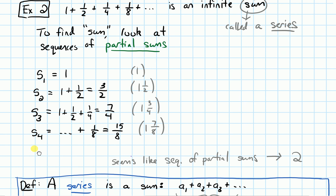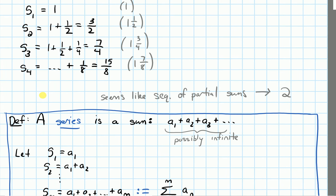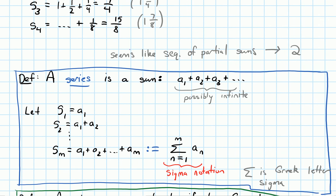Now let's state a more general definition of what a series is. A series is a sum. In general, it's going to have the form a1 plus a2 plus a3, where these a_i's are just some numbers, plus dot dot dot — so our sum might be infinite. We think about this series in terms of partial sums: s1 is just the first term a1; s2 is the first two terms added up, a1 plus a2. And eventually we can define the m-th partial sum s_m, which is the first m terms added together.